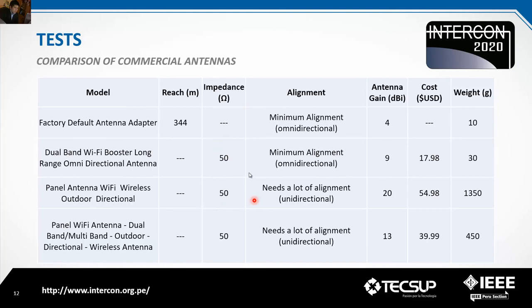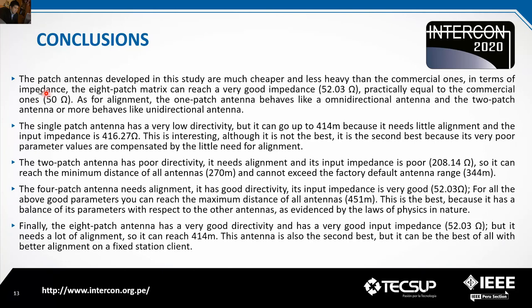A comparison table of commercial antennas is shown, including the default factory antenna for the adapter. These commercial antennas have costs of 17, 54, and 39 USD. Their impedance is 50 ohms, but their cost and weight are higher than the prototype patch antennas. In terms of impedance, the 8-patch matrix can reach a very good impedance of 52 ohms — practically equal to the commercial standard of 50 ohms.